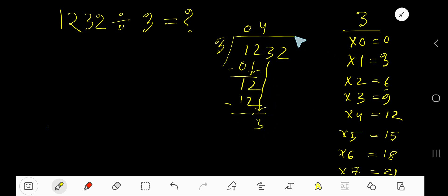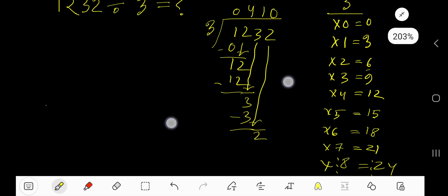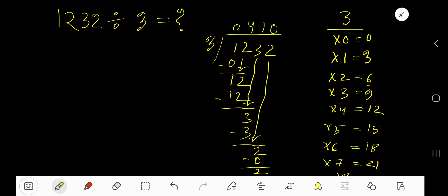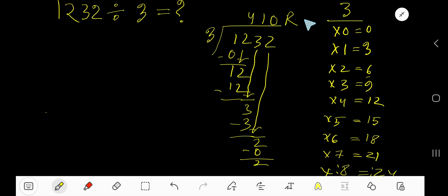0, 3 means 3. 3 goes into 3, 1 time. 1 times 3 is 3. Subtract, you are getting 0. Bring down these 2. 0, 2 means 2. 3 goes into 2, 0 times, as 2 is less than 3. 0 times 3 gives you 0. Subtract 2. So our answer is 410 remainder 2.